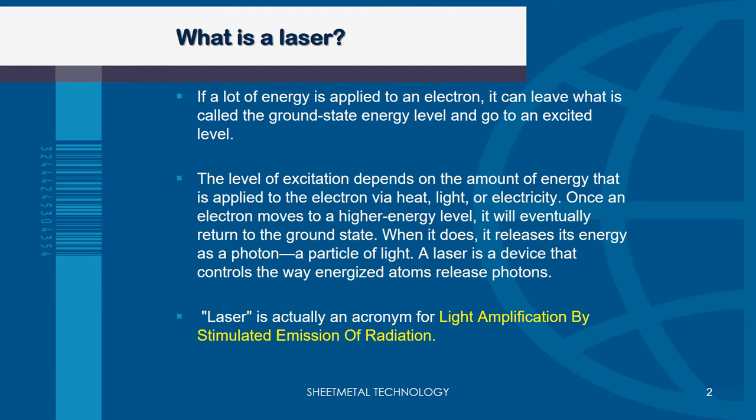So what is a laser? When we apply a lot of energy to an electron, it can leave what is called the ground state energy level and go to an excited level. The level of excitation depends on the amount of energy applied — through heat, light, or electricity. Once the electron moves to a higher energy level, it will eventually return to the ground state, releasing its energy as a photon, a particle of light. The laser is a device that controls the way energized atoms release photons. LASER is actually an acronym for Light Amplification by Stimulated Emission of Radiation.